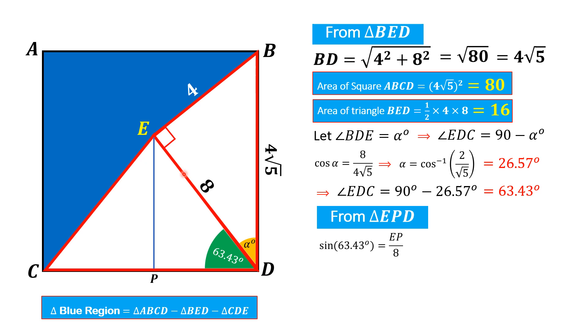Now from here sine of this angle equals EP divided by hypotenuse that is 8. And from here EP equals 8 times sine of 63.43 degrees, and that equals 7.16. So this length is equal to 7.16 units.